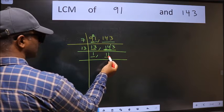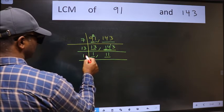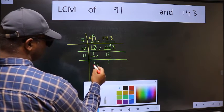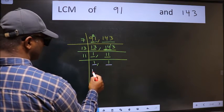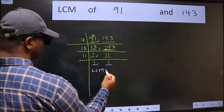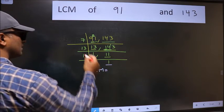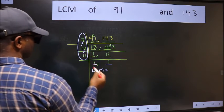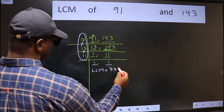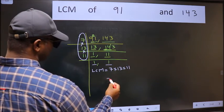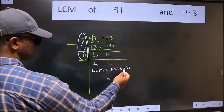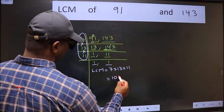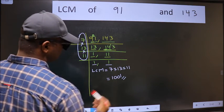Now we got 1 here, so focus on the next number 11. 11 is a prime number, so 11 times 1 is 11. We got 1 in both places. So our LCM is the product of these numbers: 7 times 13 times 11. When we multiply these numbers, we get 1001 as our LCM.